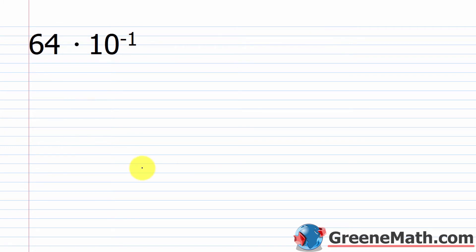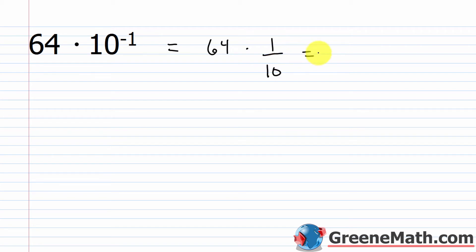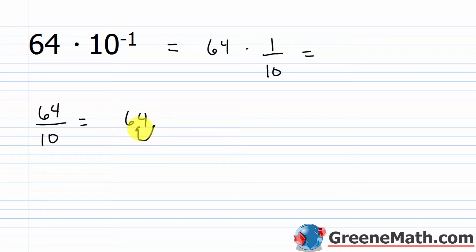What about 64 times 10 to the power of negative 1? We learned about negative exponents in our last lesson. 10 to the negative 1 is 1/10, so this is essentially 64 divided by 10. Moving the decimal point one place to the left gives 6.4.